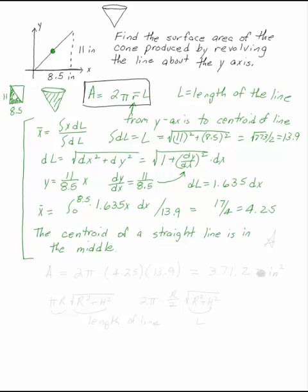Your surface area of the cone is 2π times 4.25 times 13.9. This gives you a surface area of 371.2. Remember that this is going to be in inches squared. Surface area is just inches squared, not inches cubed. It's not a volume.